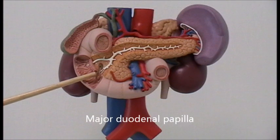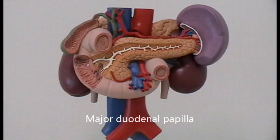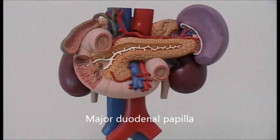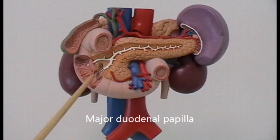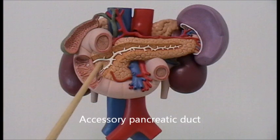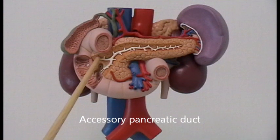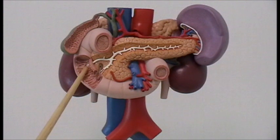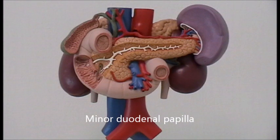The ampulla opens into the major duodenal papilla. The major duodenal papilla is surrounded by a thickening of smooth muscle fibers called the sphincter of Oddi. The major duodenal papilla is located midway in the second part of the duodenum, posteromedially. The accessory pancreatic duct is not always present. When present, it opens separately on the minor duodenal papilla in the second part of the duodenum, proximal to the major.